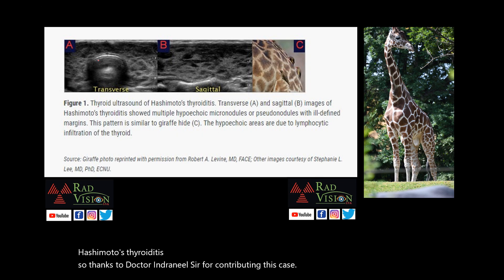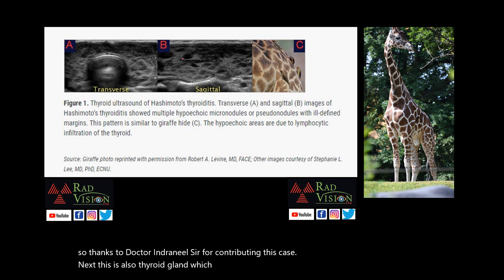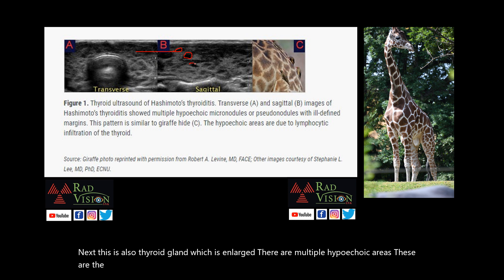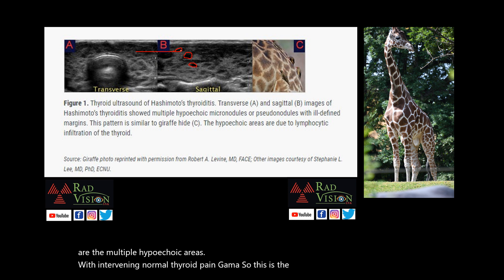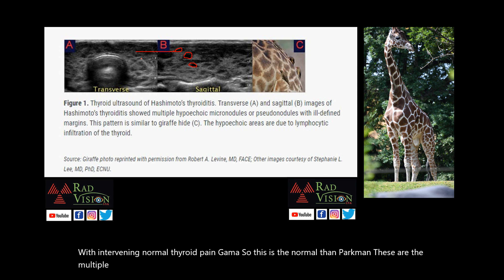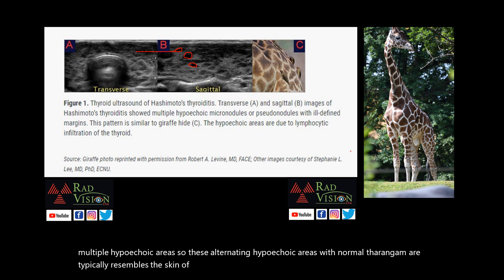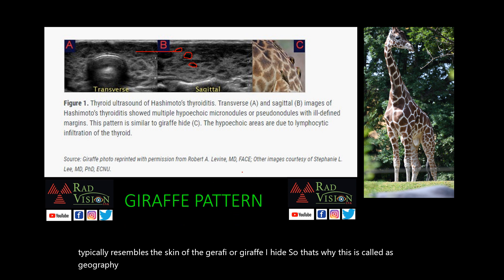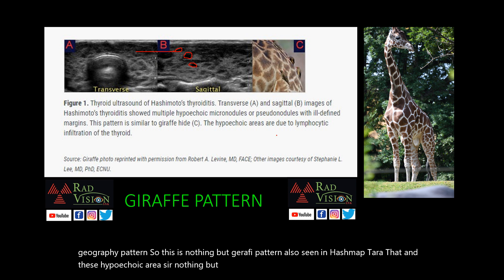Next case also shows an enlarged thyroid gland with multiple hypoechoic areas with intervening normal thyroid parenchyma. These alternating hypoechoic areas with normal thyroid parenchyma typically resemble the skin of a giraffe — that is why this is called the giraffe pattern, also seen in Hashimoto's thyroiditis. These hypoechoic areas represent lymphocytic infiltration within the normal thyroid parenchyma.